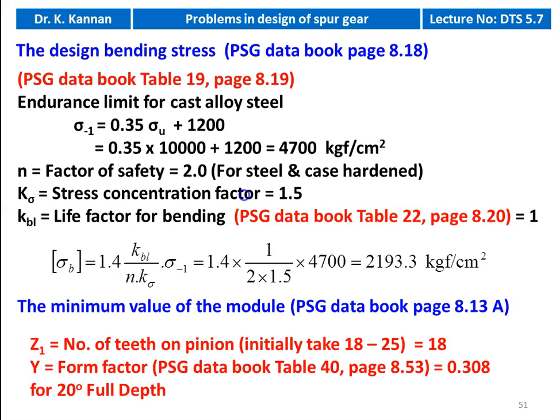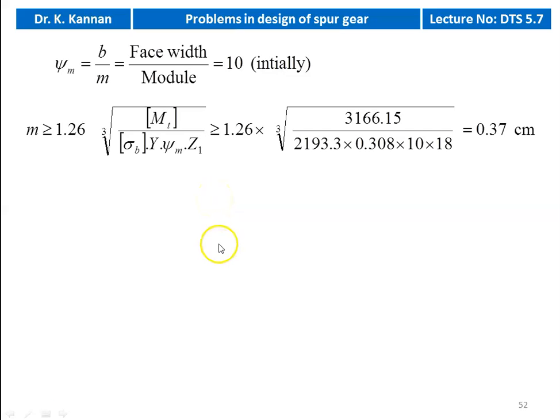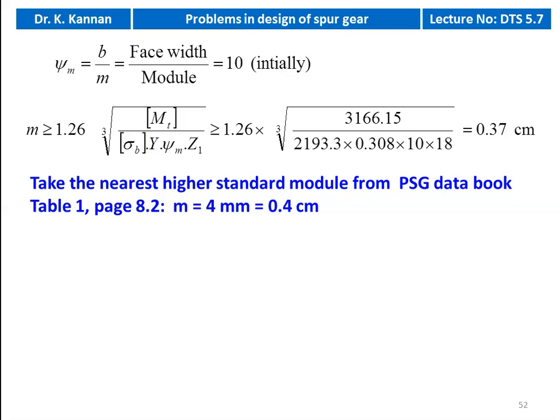The minimum value of the module — from page number 8.13, we take number of teeth on the pinion z1 equal to 18, and the form factor for 18 teeth is 0.308 for full depth 20 degree pressure angle. The psi_m (b/m) value we take initially as 10. Module is greater than or equal to 1.26 into the cubic root of design torque divided by design bending stress × form factor × psi_m × z1: 1.26 into cubic root of 3166.15 divided by 2193.3 × 0.308 × 10 × 18, which is 0.37 centimeter. So the standard module m equals 4 millimeter (0.4 centimeter).